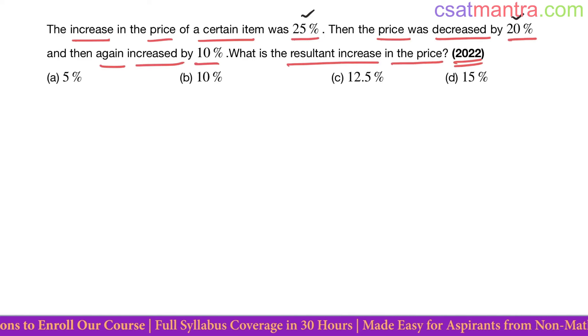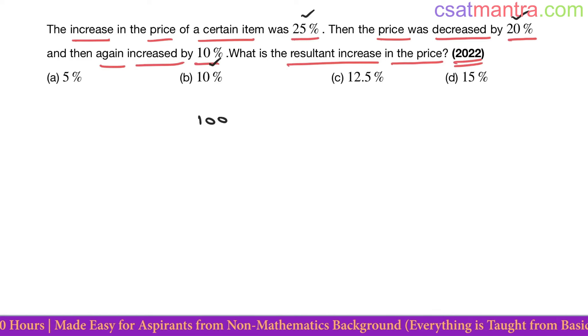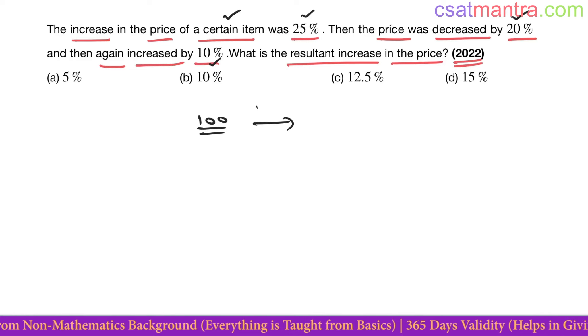Everything is in percentage, options are also in percentage. So without loss of generality, let the price of that item be 100 rupees. The increase in the price of a certain item was 25%, so this 100 you increase it 25%, it will become 125 rupees.